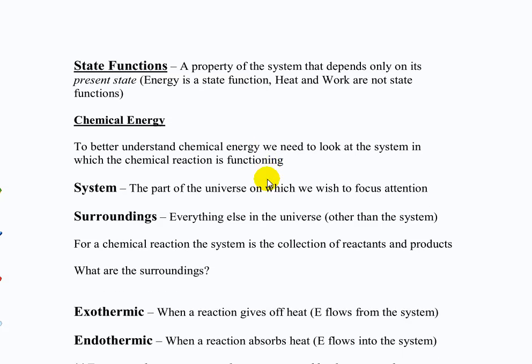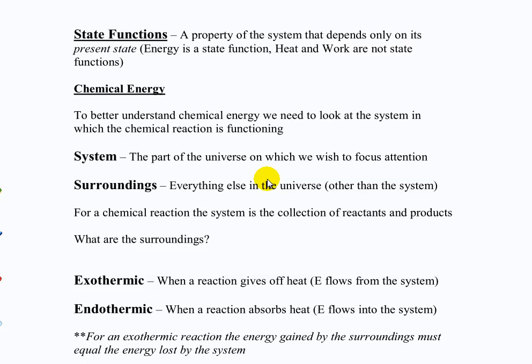And it's being transferred out into the surroundings around the reaction. So we define two specific parts of a chemical reaction when we talk about the energy change. We talk about the system and we talk about the surroundings. So the system is the thing we care about and the surroundings are everything else. A chemical reaction, the system is the reactants and products. What are the surroundings? The air might be one. What's a more immediate surrounding? The container. The solvent.